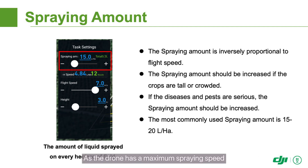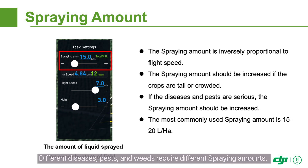As the drone has a maximum spraying speed, the larger the spraying amount, the lower the flight speed. Different diseases, pests, and weeds require different spraying amounts.